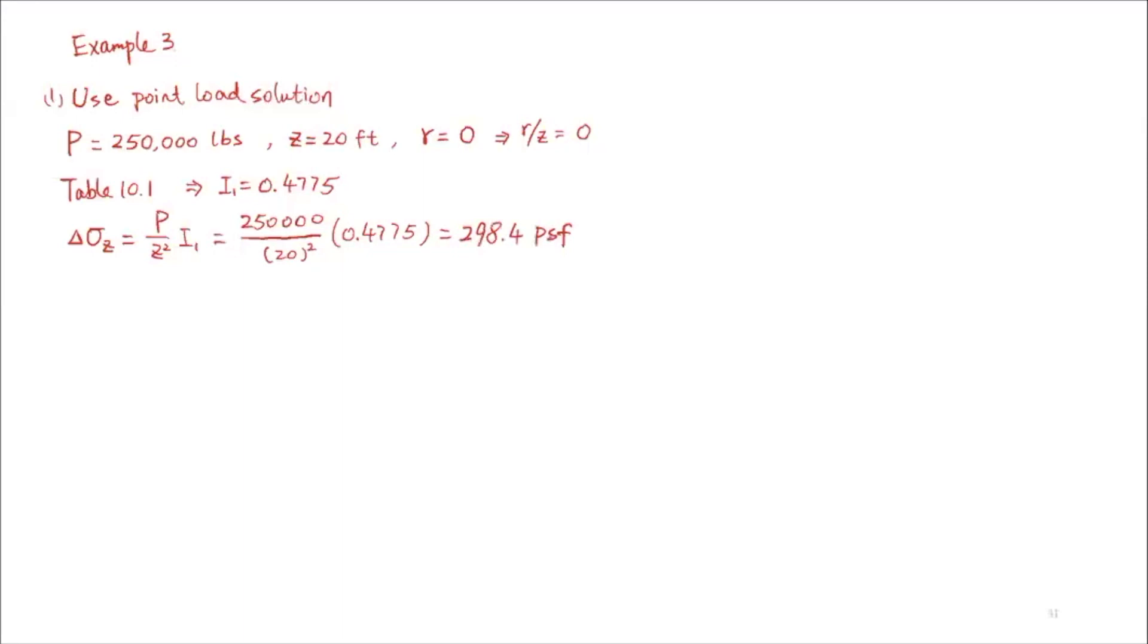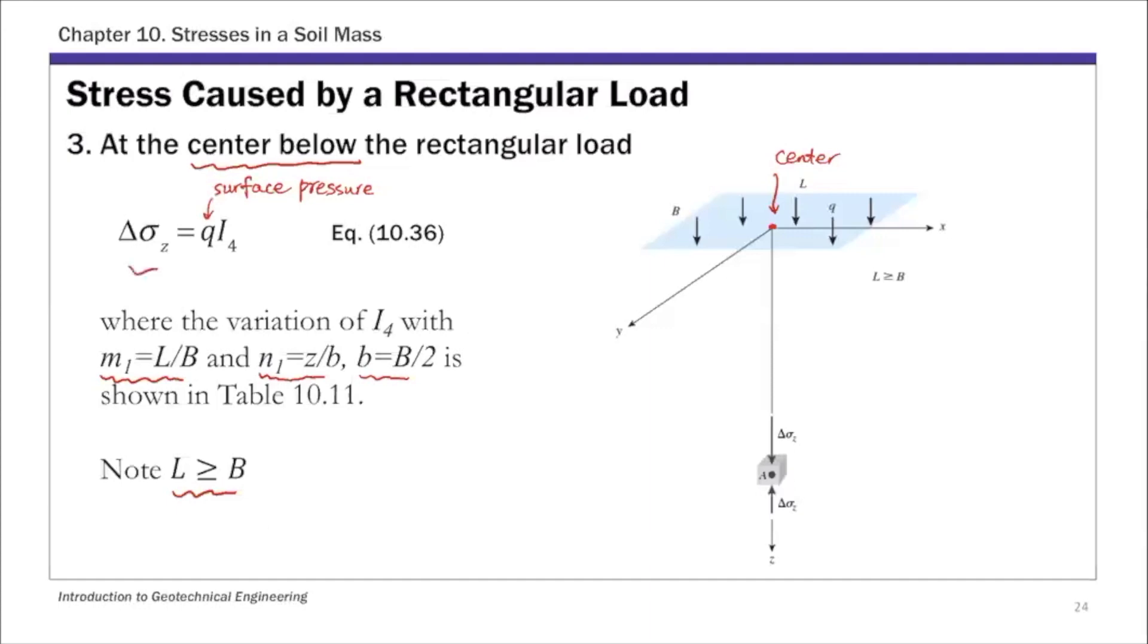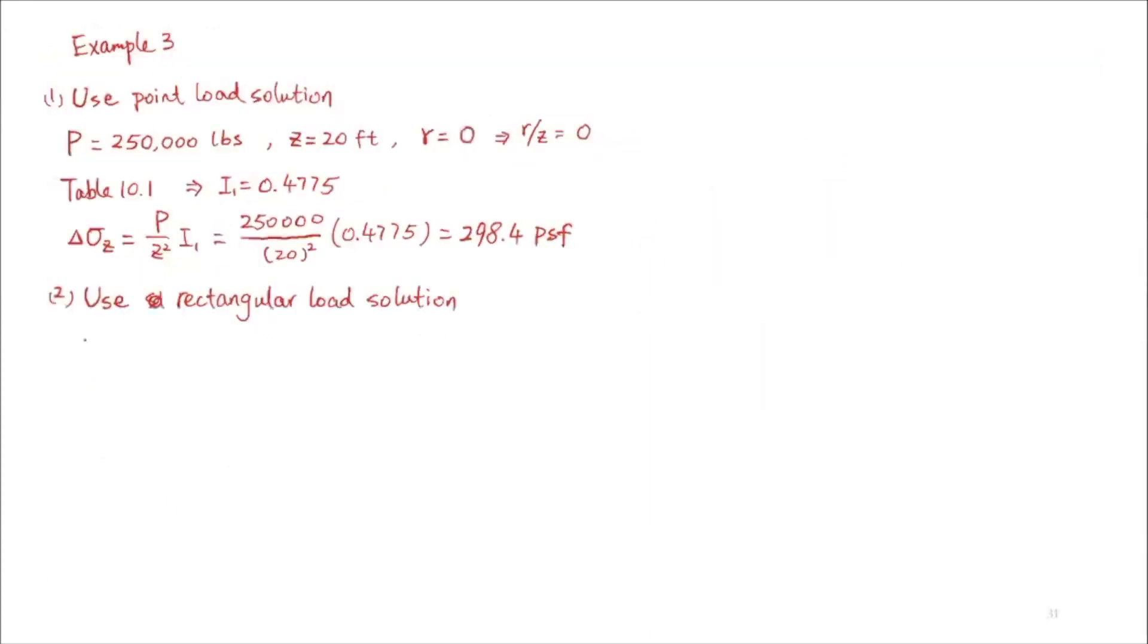For the second case, let's use the rectangular solution. Since this is directly under the center of the footing, that's case number 3. The dimensions of this rectangular footing are: B is 8 feet and L is 12 feet.